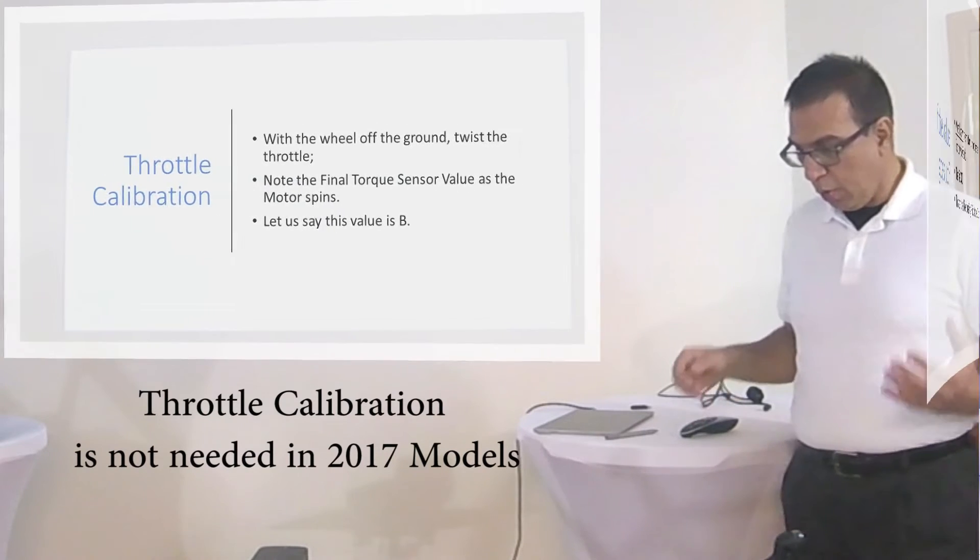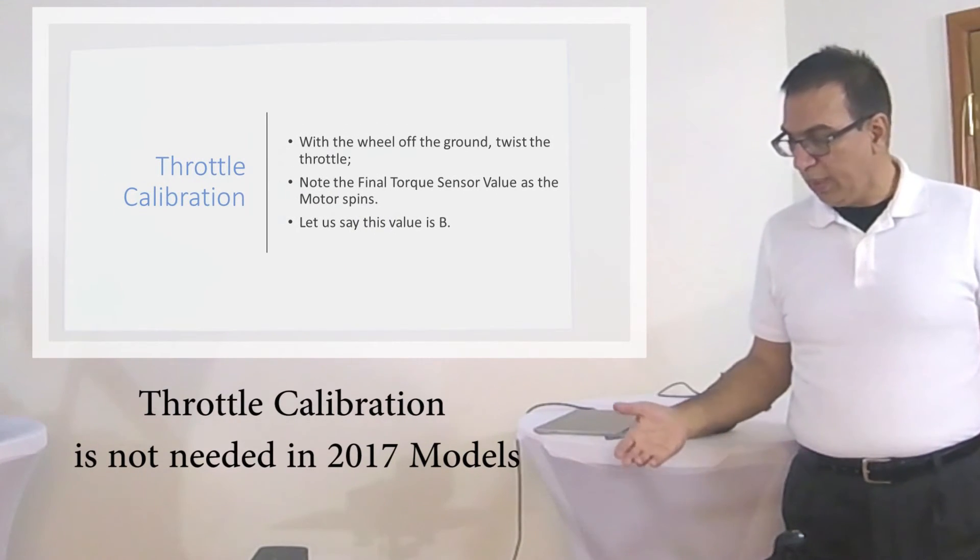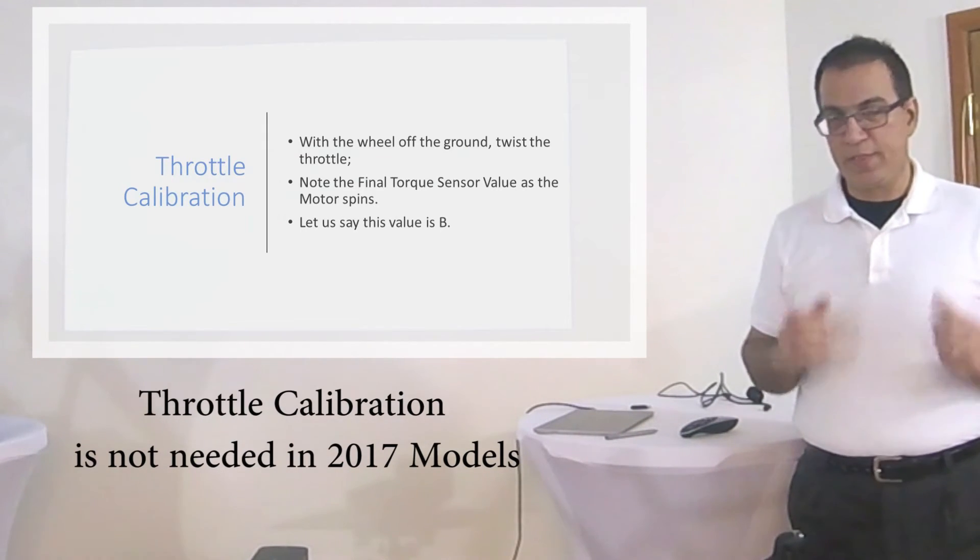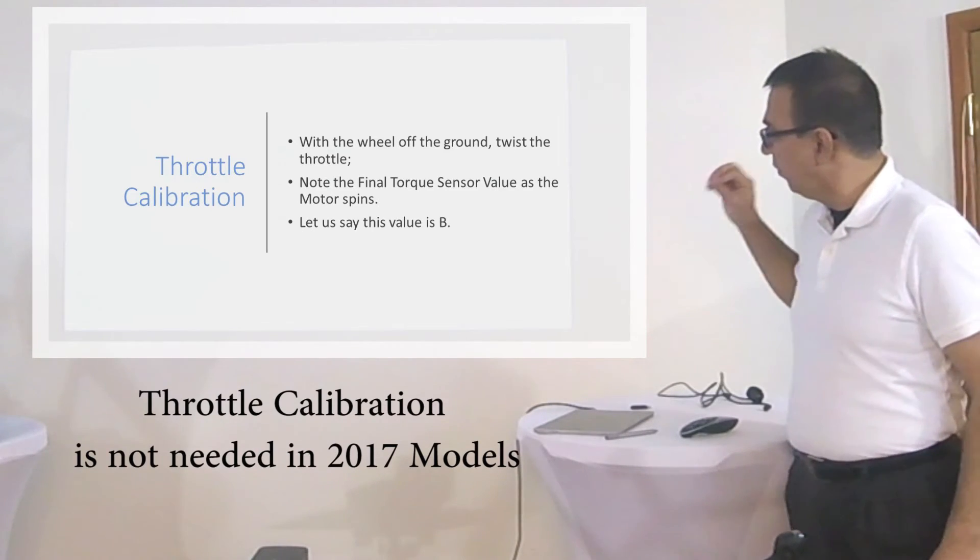Now throttle calibration. The process of throttle calibration is that we spin the wheel and observe the raw value and the torque sensor final value. Let's assume that this value is V. The torque sensor final value is B.